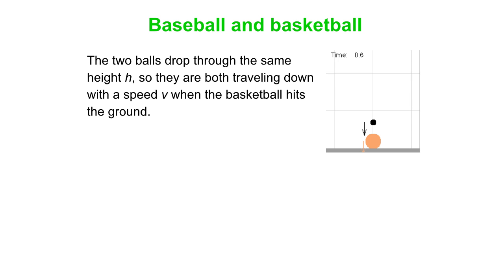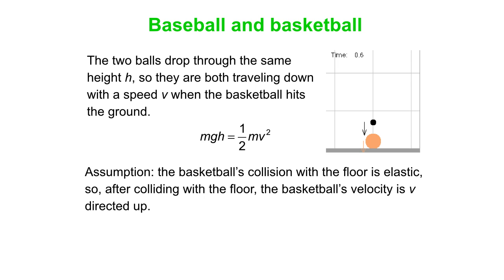Let's analyze that. We're going to drop the balls so they drop through the same height h, and they acquire speed v when the basketball hits the ground. This is just energy conservation, mgh equals one-half mv squared. Note that this is before the collision happens, so we can use energy conservation. The m's cancel out, so it's the same v for both balls.